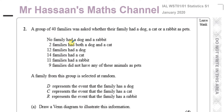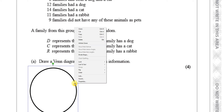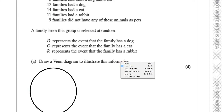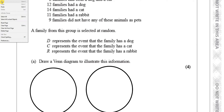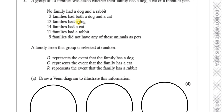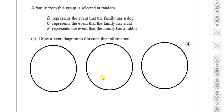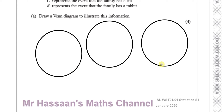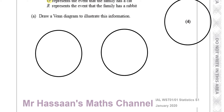I'm going to draw three circles using this program. I have three circles: one represents dog, one represents cats, and the other one represents rabbits. Now there's no family that had a dog and a rabbit, so there's no intersection between dog and rabbit. So if I take this as dog and this as rabbit, they have no intersection between them.